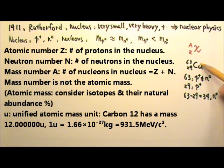For example, Cu, that's for copper, 63,29 has 63 protons and neutrons together, 63 nucleons, 29 protons, and 63 minus 29, which is 34 neutrons.